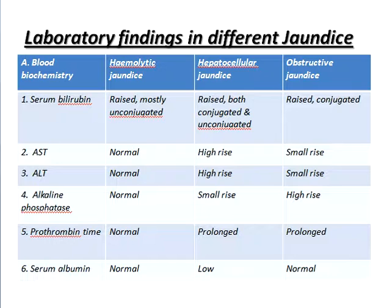Laboratory findings in different types of jaundice. First, blood biochemistry findings. Condition of serum bilirubin: in hemolytic jaundice, serum bilirubin is mostly raised and it is unconjugated. In hepatocellular jaundice, it is raised — both conjugated and unconjugated. In obstructive jaundice, bilirubin is raised and it is only conjugated.